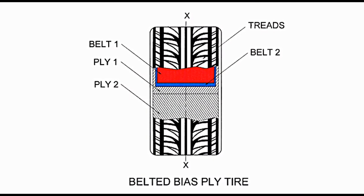Belted bias ply tyre. This is a variant of bias ply tyre. It has belts located between the plies and treads. Referring to the diagram showing a cut section, the treads form the top layer. Next, there is belt 1 shown in red colour, and below it belt 2 shown in blue colour. Belts are followed by ply 1 and ply 2. Belts are continuous and wrap around the plies. Belts too are rubber impregnated on cords, and these provide strength to the tyre.